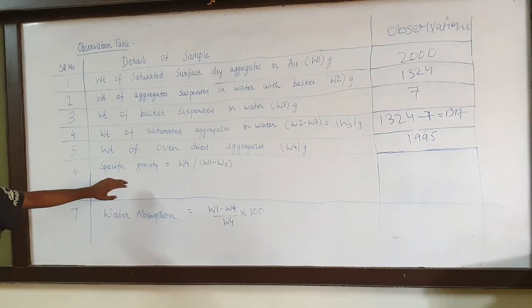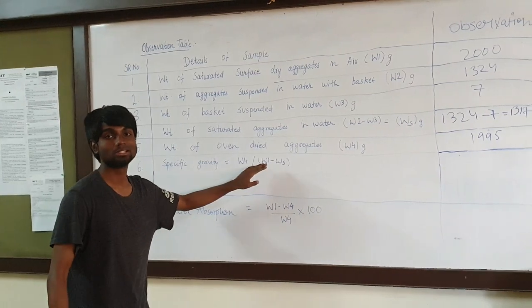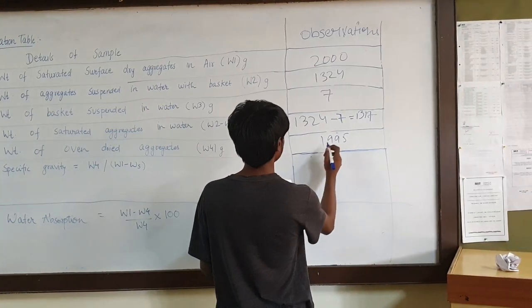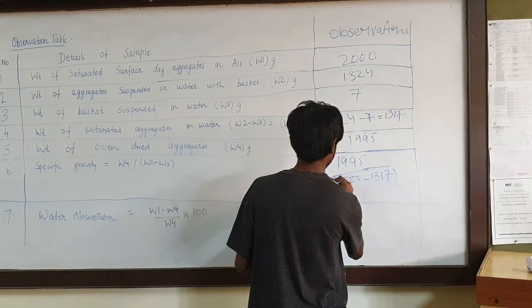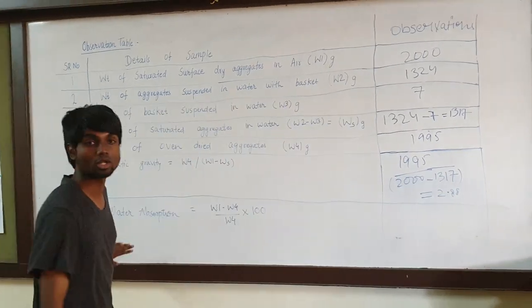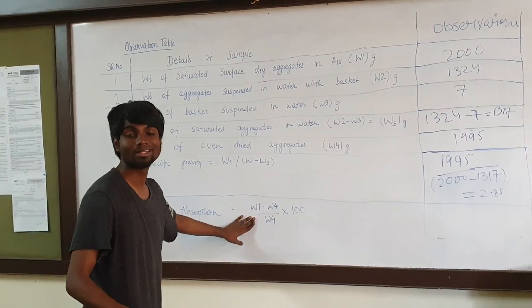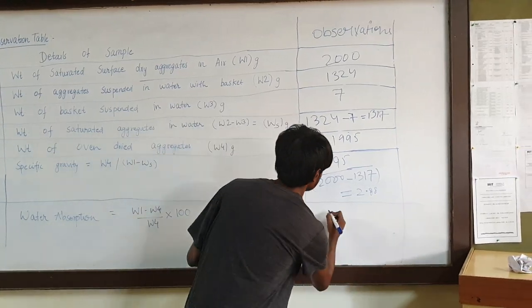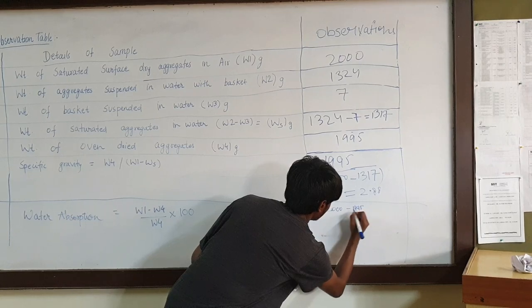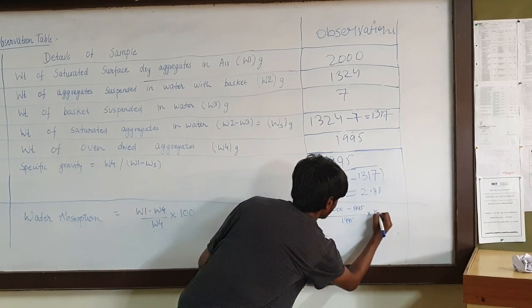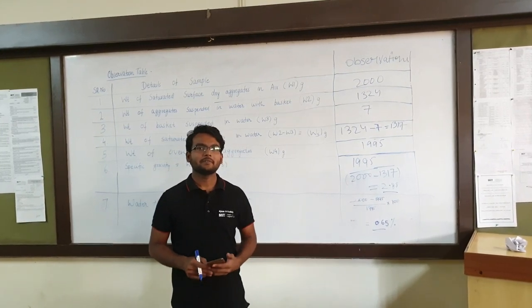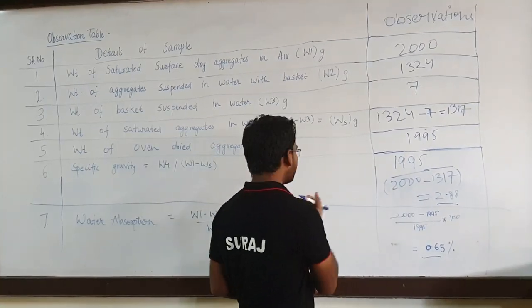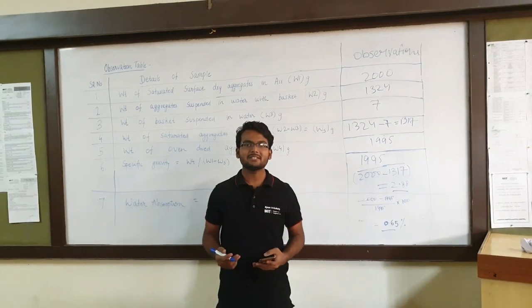Now we find the specific gravity using the formula: W4 divided by (W1 minus Ws), which gives 1995 divided by (2000 minus 1317), resulting in a specific gravity of 2.88. The water absorption is calculated as (W1 minus W4) divided by W4, multiplied by 100, which gives 0.25%.